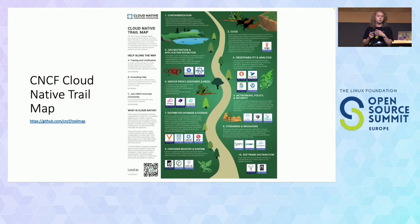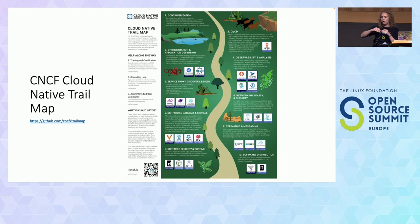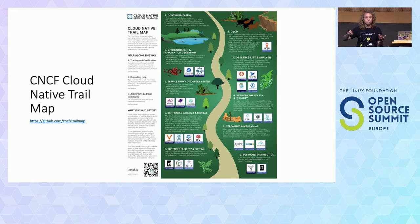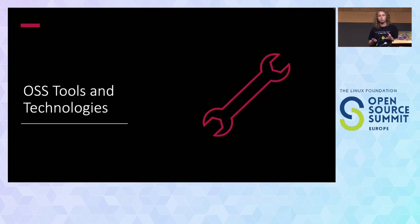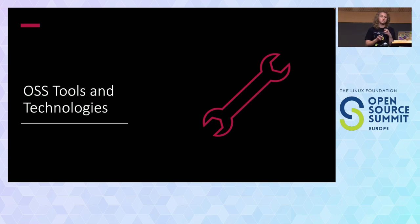Other methodologies we can use include things like the CNCF Cloud Native Trail Map. This is designed to be a trail you take through various different stages and steps you should be following when designing and building cloud native applications, including containerization, observability, metrics, and data storage. That can be a very helpful one. There's also the IBM Garage methodology that you can check out as well, which is a field guide you can access for free. And there are a bunch of tools and technologies you can use - there are loads of open source communities that can enable you in building those applications.